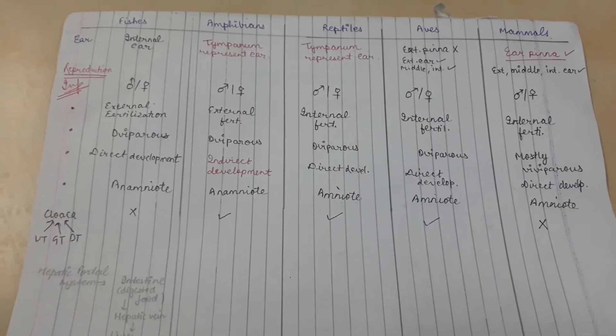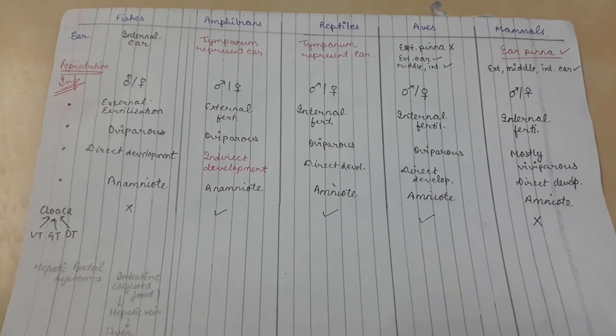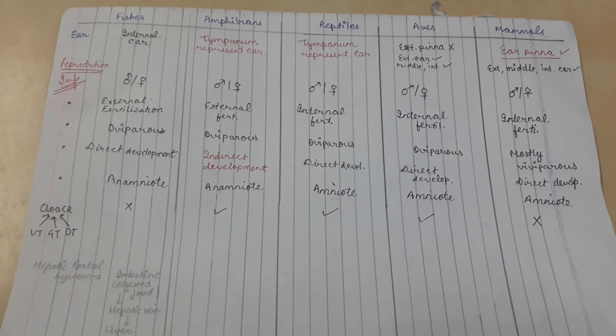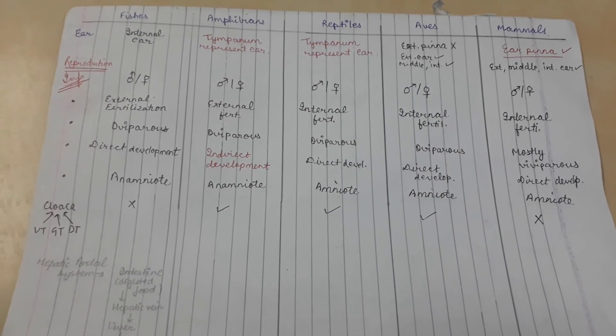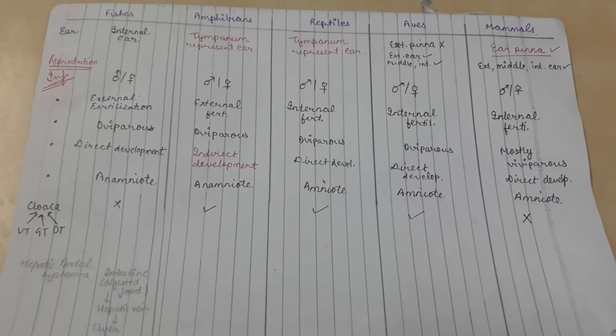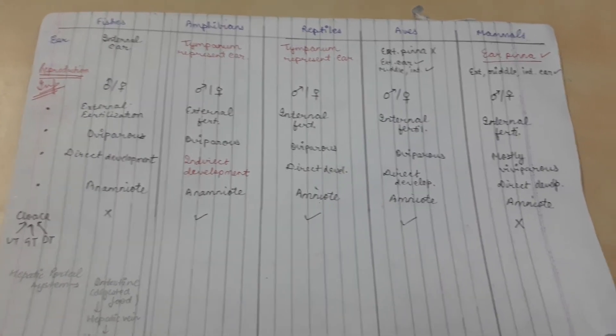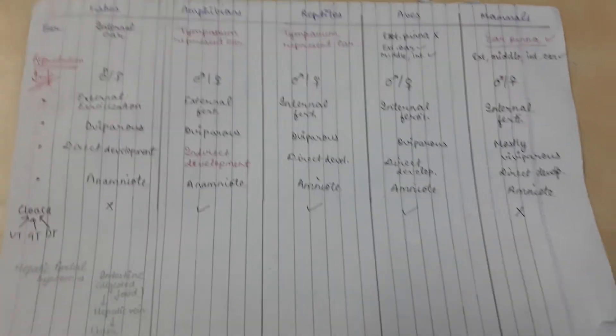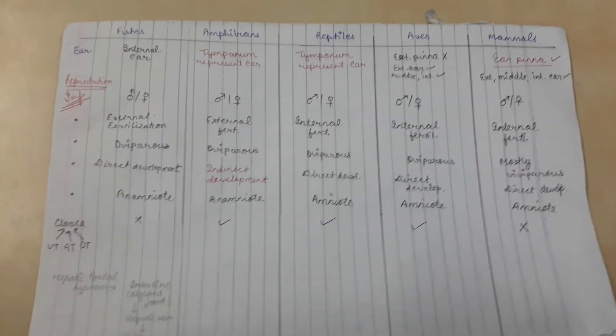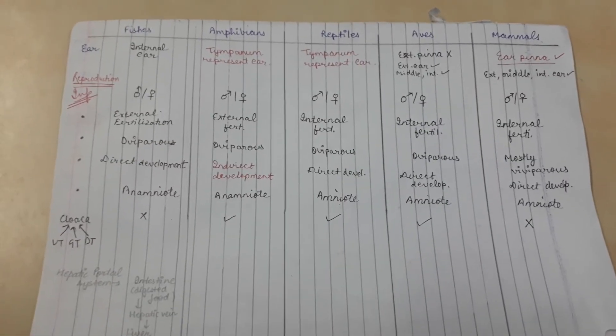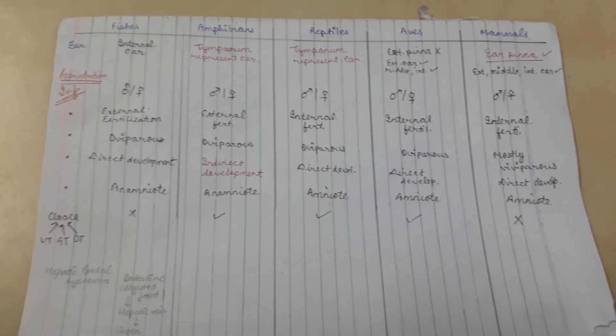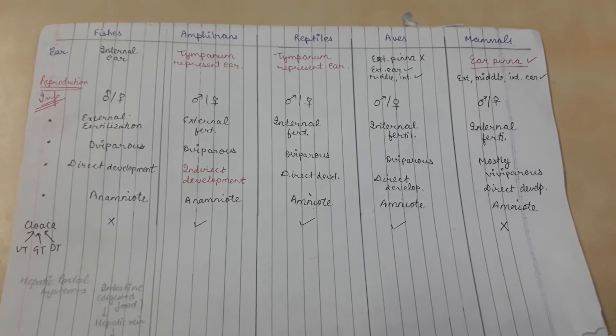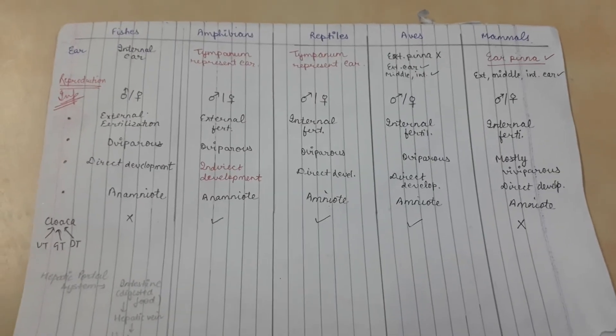Reproduction: all of them have sexual dimorphism. Internal fertilization starts from reptiles, so reptiles, aves, and mammals have internal fertilization. Only mammals are viviparous, and amphibians possess indirect development. Indirect development means there's a larval stage included. A common example is the frog which has a larva known as tadpole.